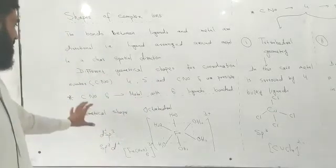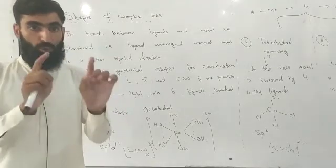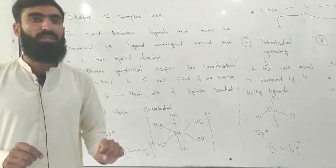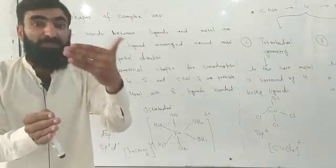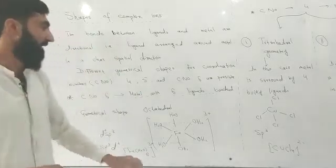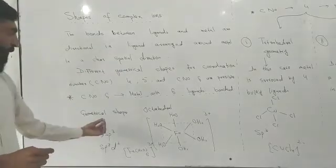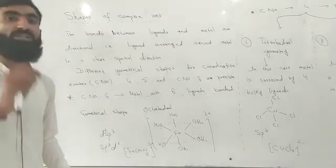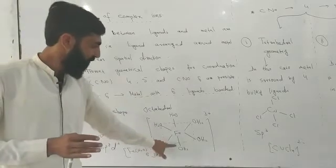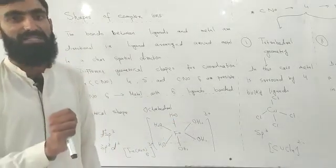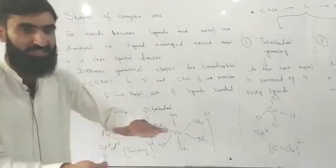First let's look at coordination number 6. When you have a central metal atom with six ligands attached, the geometry is octahedral. Octahedral means six ligands — one, two, three, four, five, six — with the central metal atom in the middle.